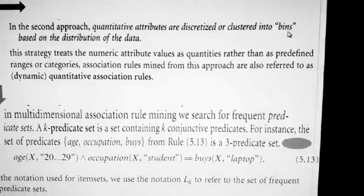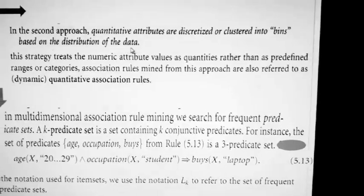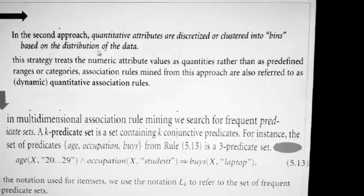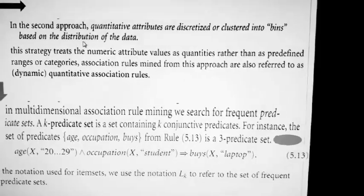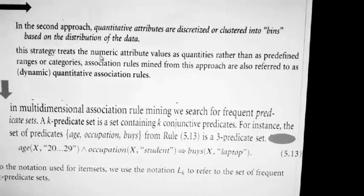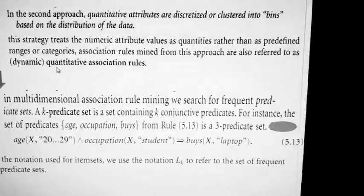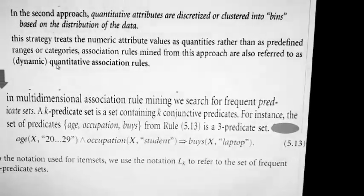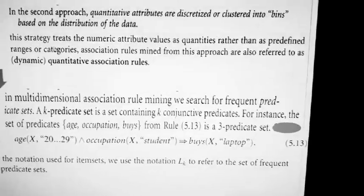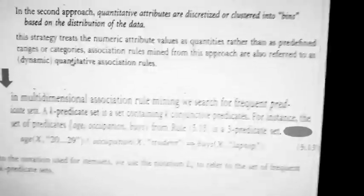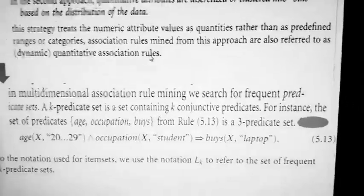In the second approach, quantitative attributes are clustered into bins based on the distribution of the data. The range is no longer fixed or predefined — it depends on how the data is distributed. Because it depends on the data distribution rather than a fixed definition, it is called dynamic quantitative association rule mining.